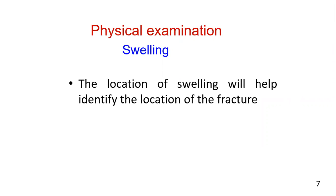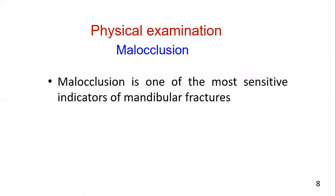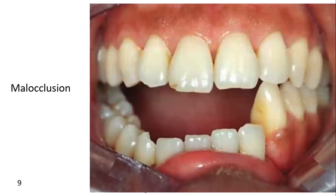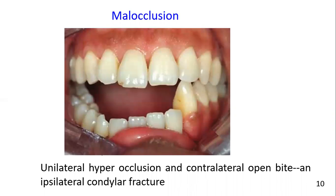The location of swelling will help identify the location of the fracture. Malocclusion is one of the most sensitive indicators of mandibular fractures. It may be visible to the clinician and evident to the patient. This case exhibits an obvious malocclusion caused by a fracture between the left canine and the lateral incisor. Unilateral hyperocclusion and contralateral open bite usually indicate an ipsilateral condylar fracture.